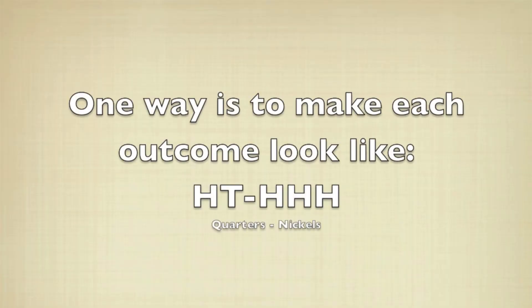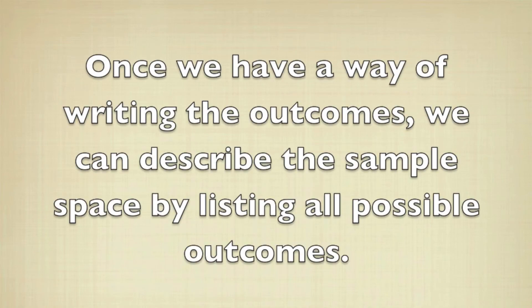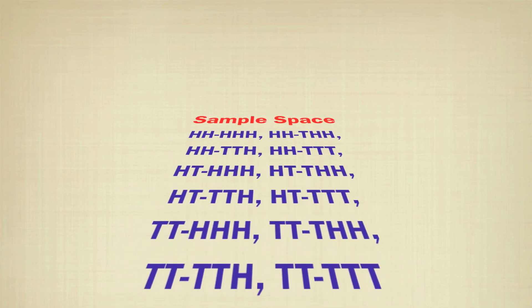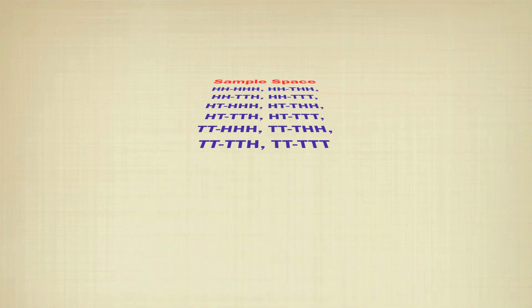One way to write them down is to just write down exactly what we see. So we put quarters first and nickels second, and then heads and tails, depending on what's on the coin. Once we have a way of writing down the outcomes, the sample space is just all the possibles. With this description, the sample space will be these 12 events.